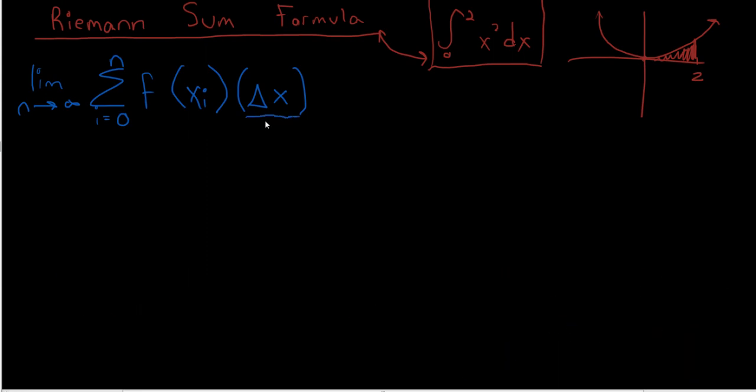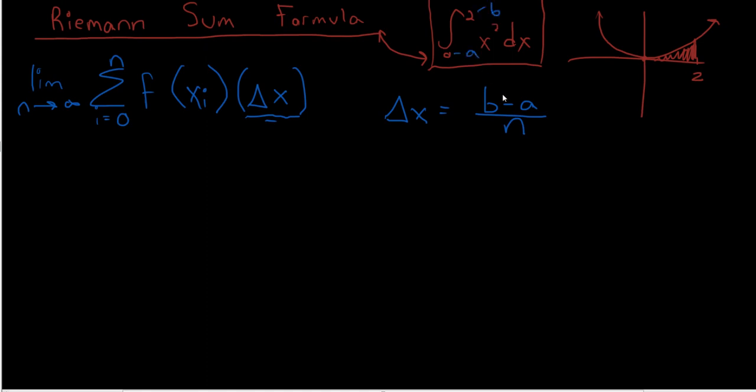So the first thing we should solve for is delta x. And the equation you learned for delta x is delta x equals b minus a over n. b is always this, a is this, and we'll keep n as a variable because we're setting n to infinity. So delta x equals 2 over n.